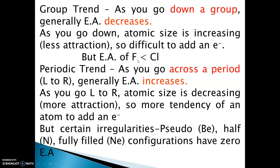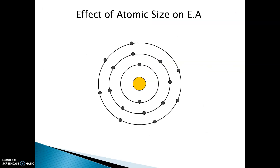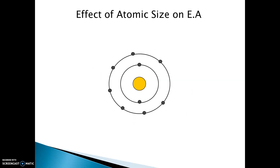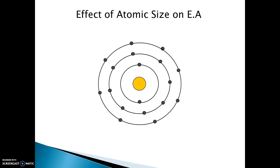So the incoming electron does not feel much attraction towards the nucleus as compared to chlorine atom, which has a larger 3p orbital. Therefore electron affinity of fluorine is less than chlorine. To demonstrate this again — for fluorine, the addition of electron is shown at a slower speed, meaning electron affinity is less. Whereas for chlorine, there is more tendency to accept an incoming electron.